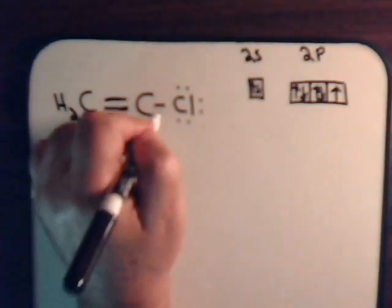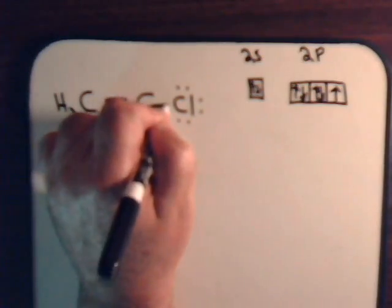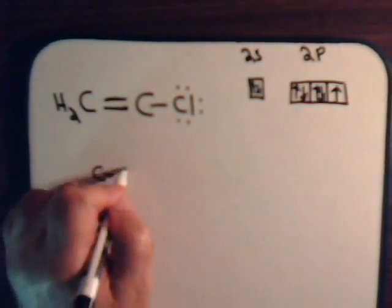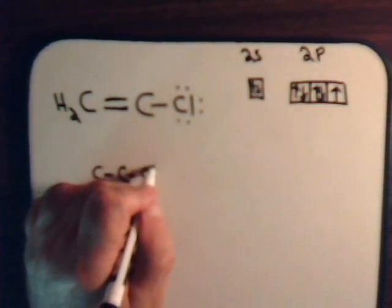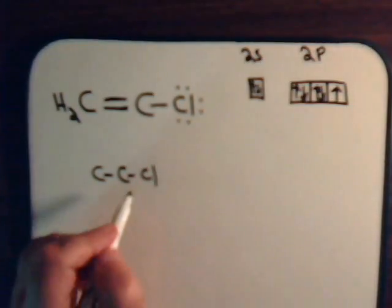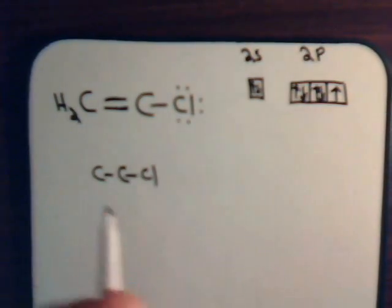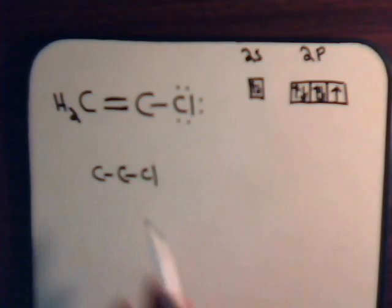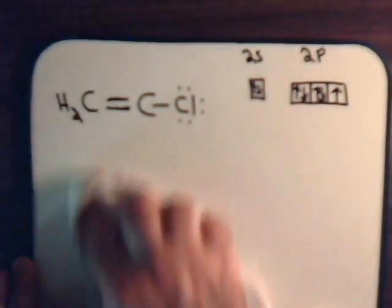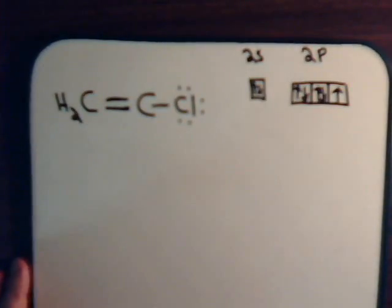But if we compare the bond strength of vinyl chloride with ethyl chloride, it turns out this bond here is significantly stronger than this carbon chloride bond here. So again, we have a resonance type situation. Before we draw the Lewis structures, let's try to draw schematically what's happening.